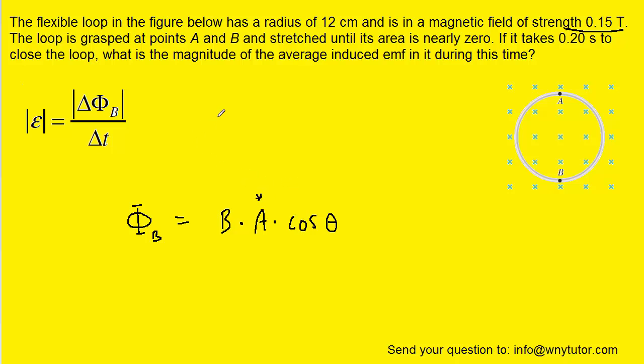But what is changing is the term area. And the reason for that is because the loop starts out as a circle and then is closed over a particular time interval to become a point. So in essence, the final area of this loop is zero and the initial area is going to be the area of a circle.